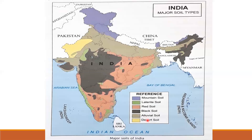Alluvial soil is shown using light mud color or mouse gray color. Alluvial soil is found in Punjab, Haryana, Uttar Pradesh, Bihar, West Bengal, some parts of Assam, and Gujarat.